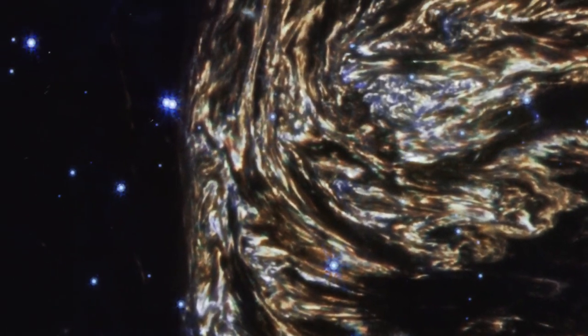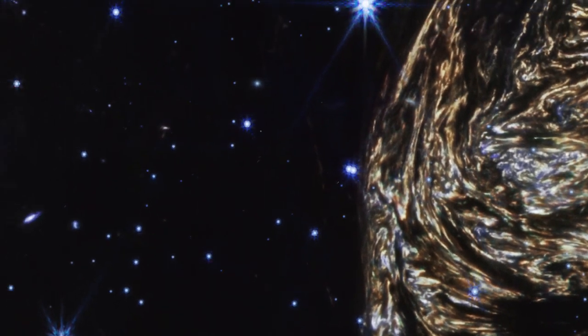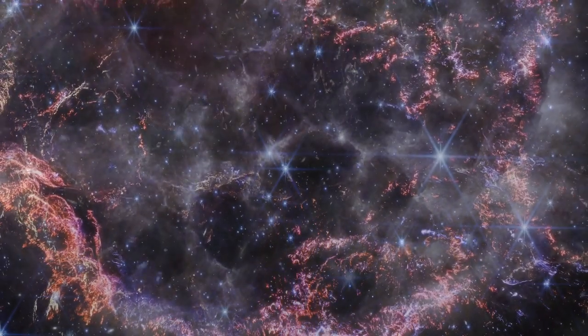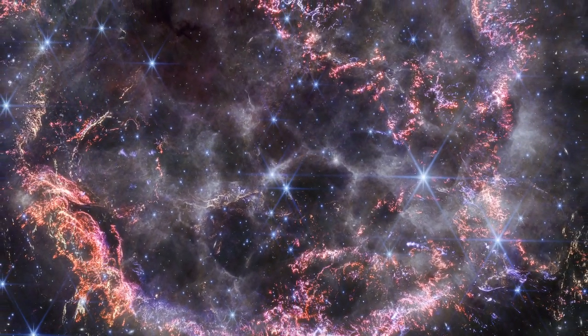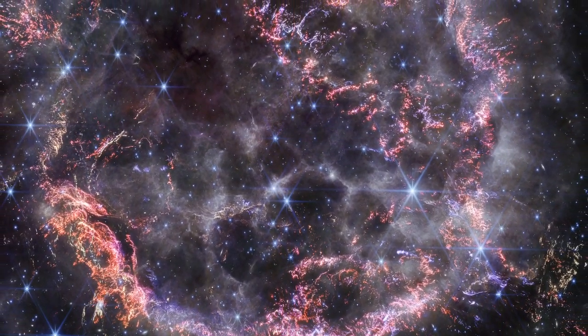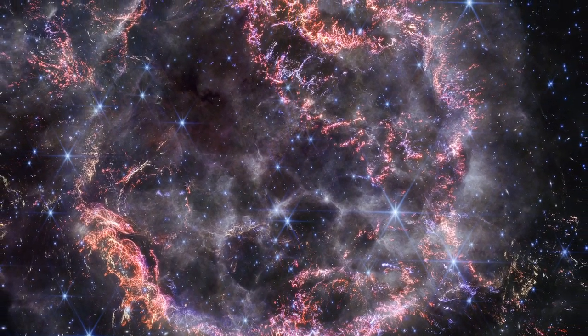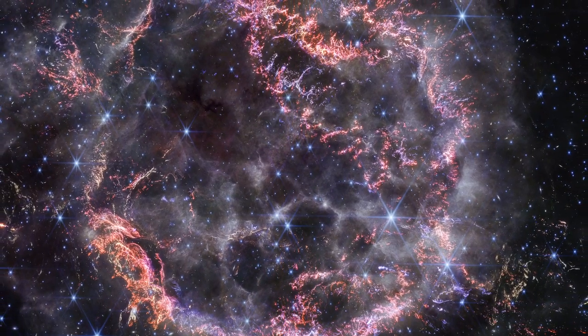The unprecedented detail captured in this new image of Cassiopeia A has allowed scientists to discern intricate small-scale structures within the remnants of a supernova. This newfound infrared clarity, only possible with Webb's instruments, enhances our understanding of the processes surrounding supernovae.